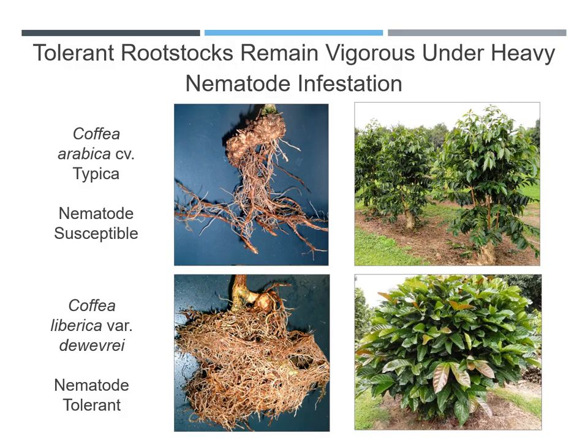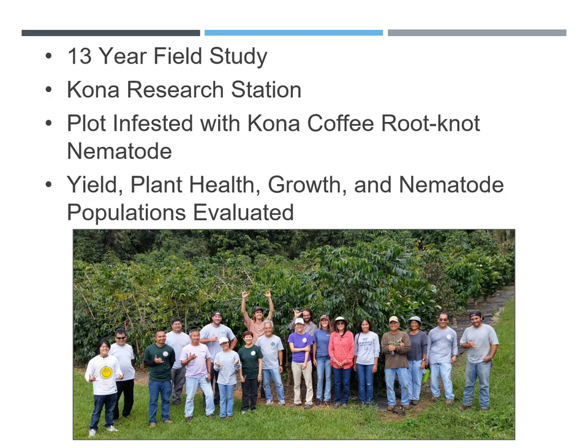Why does grafting on nematode tolerant rootstocks work? Here in Hawaii, Coffea liberica is commonly used. The species itself is a larger, faster growing tree, which also has a more robust, extensive root system, which remains vigorous even under heavy nematode infestation. When nematodes feed on Typica, the roots die back and the root system goes into decline. When Liberica roots are being attacked, new root growth is stimulated. A 13-year field study was conducted at the Kona Experiment Station in Kainaliu that evaluated a nematode infested field plot containing Typica grafted onto seven different cultivars of varying nematode tolerance or susceptibility and compared with non-grafted trees. Tree yield, plant health, plant growth, and nematode populations were evaluated.